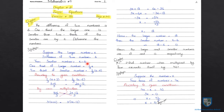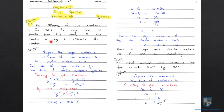Two thirds of the smaller number minus one third is equal to x. According to the given condition, the larger number plus 2 is equal to 2 by 3 into x minus 6, meaning 2 by 3 of the smaller number.